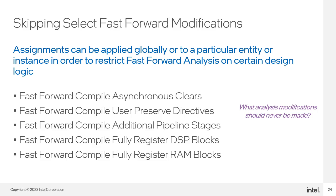Another way to control Fast Forward is to limit the types of analysis performed. There is a list of assignments you can add to your project to disable certain aspects of the Fast Forward analysis. Applying these assignments to specific instances or globally, you can tell Fast Forward that you never want a particular optimization or modification to be performed on a section of or the entire design.